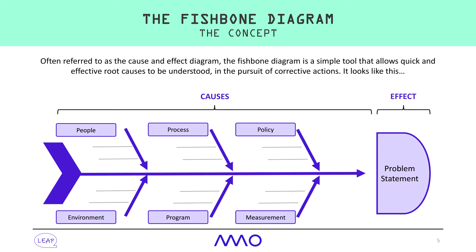Using the fishbone diagram, you identify a problem statement. For example, let's say the resource process at the organization you're working in is ineffective. It's a large organization with over 300 people to manage in your department. The resource process needs to change, but what has led to this ineffective process? In a fishbone diagram there are six key themes, highlighted along the bones of the diagram.